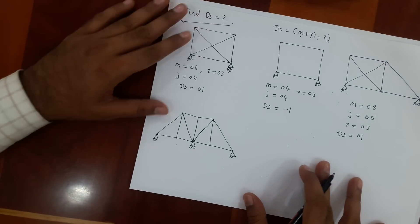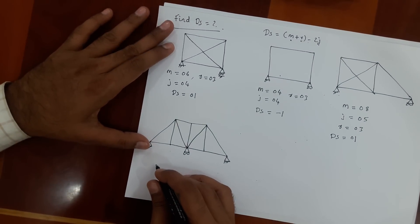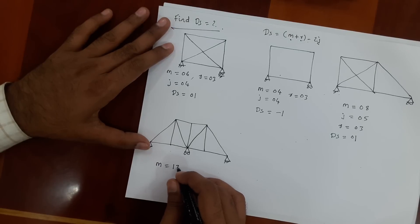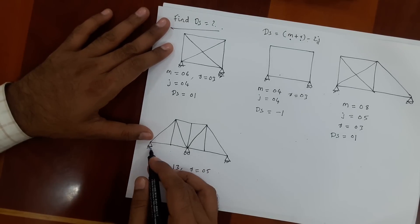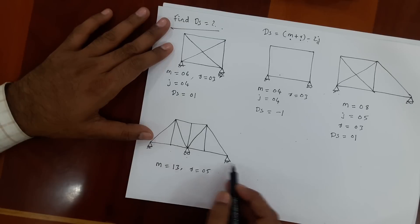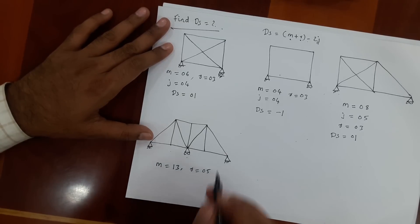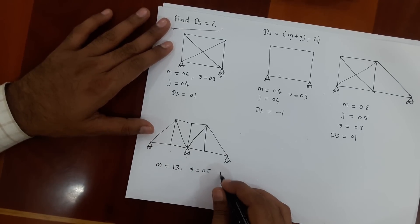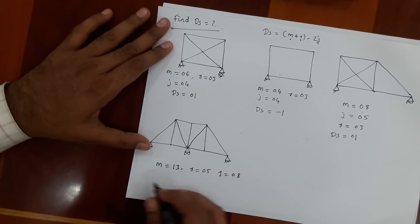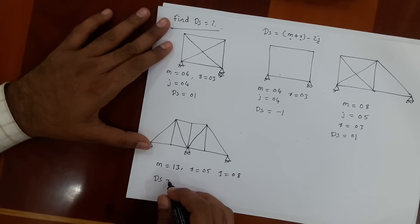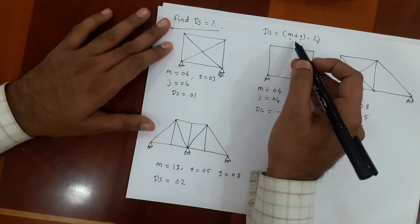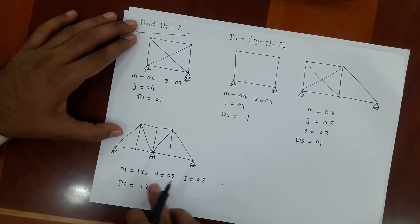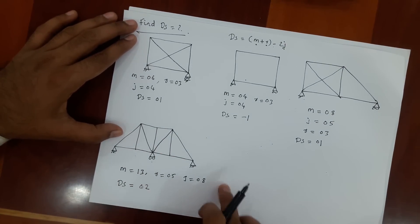Similarly, for this structure, number of members are 13, reactions are 5 — that is 2 plus 1 plus 2, totaling 5. Number of joints are 8. So degree of statical indeterminacy for this structure will be 2. You can use this formula — you just have to substitute the values.